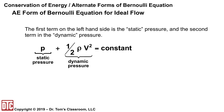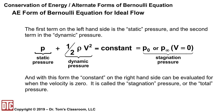The first term, p, is the static pressure. The second term, one-half rho v squared, is called the dynamic pressure. Those two added together must be a constant. If we evaluate that constant by setting v equals zero, we get what is called the stagnation pressure — sometimes written as p-sub-zero or p-infinity, also called the total pressure. This is a very useful equation for many problems.